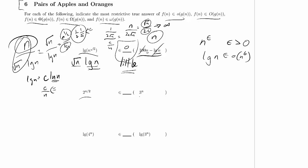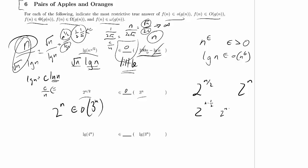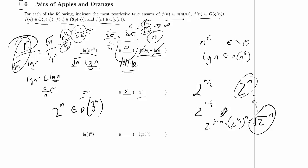2 raised to the n over 2 versus 3 to the n. Well, 2 to the n is already an element of little o of 3 to the n — we've seen that before. So 2 to the n over 2 has got to be an element of little o of 3 to the n. Just as an exercise: 2 to the n over 2 equals 2 to the one-half times n, which is the square root of 2 raised to the n, and that will be dominated by 2 to the n. So dividing by 2 in the exponent makes it asymptotically smaller, and this one is also little o.